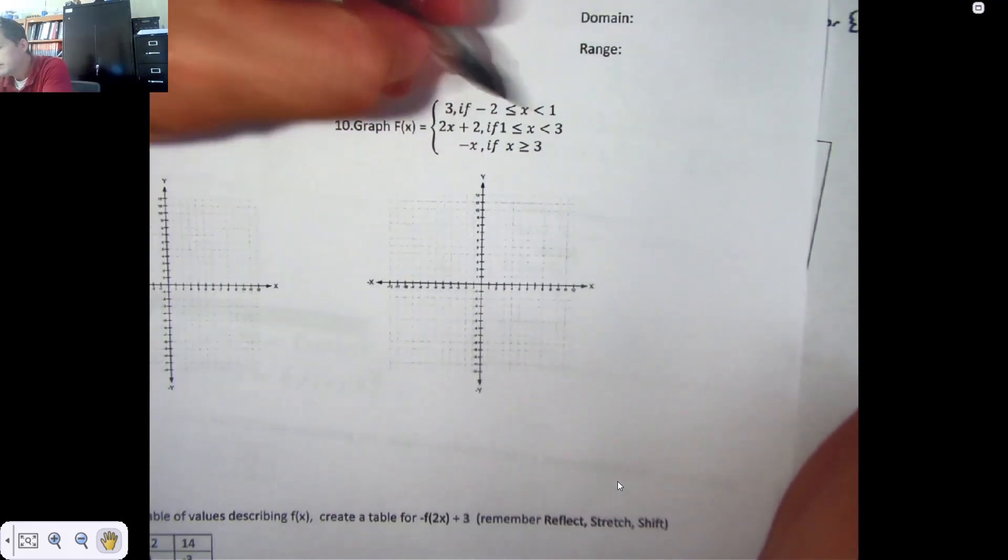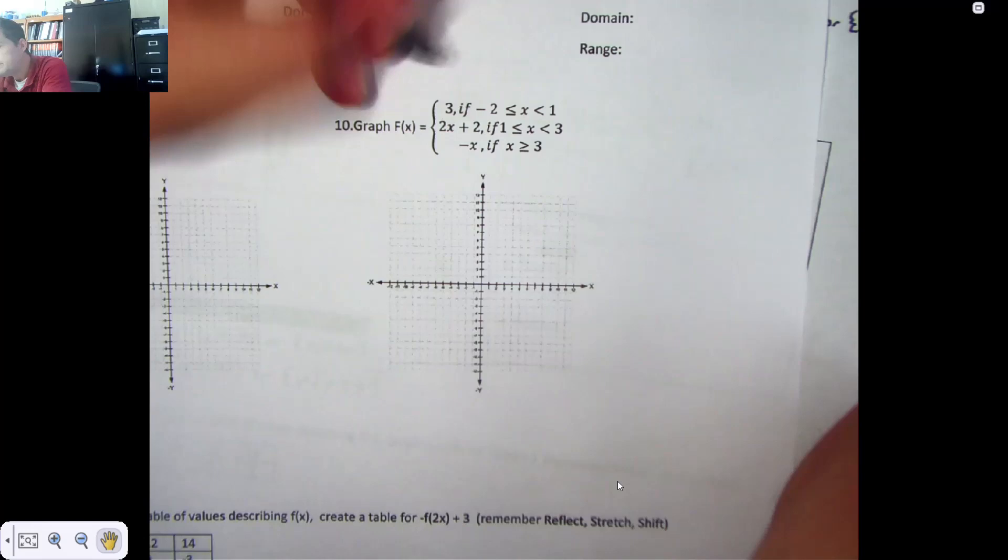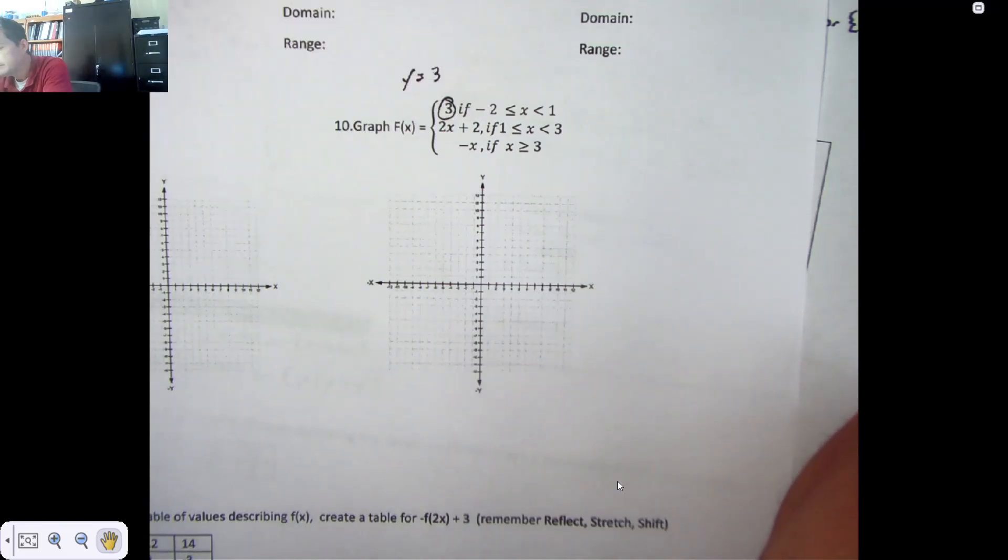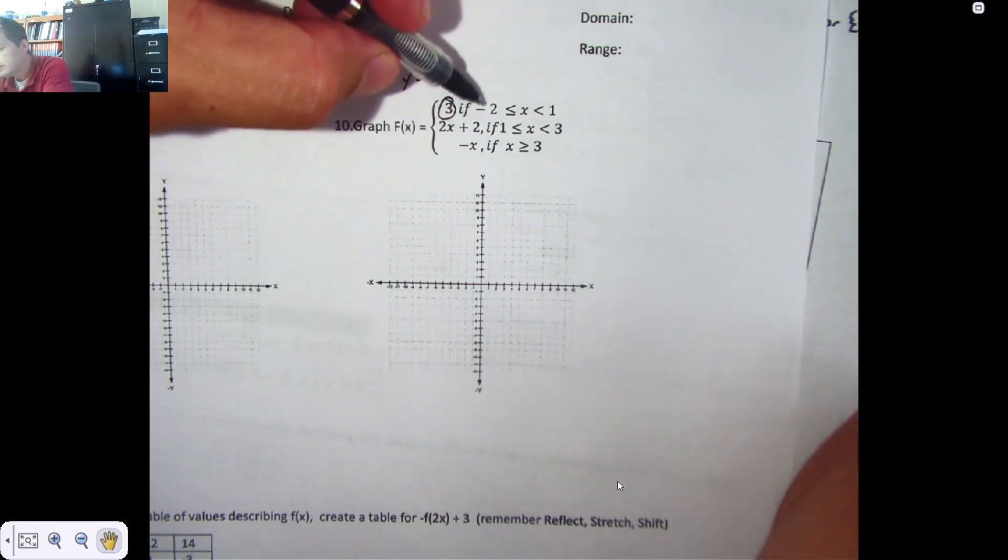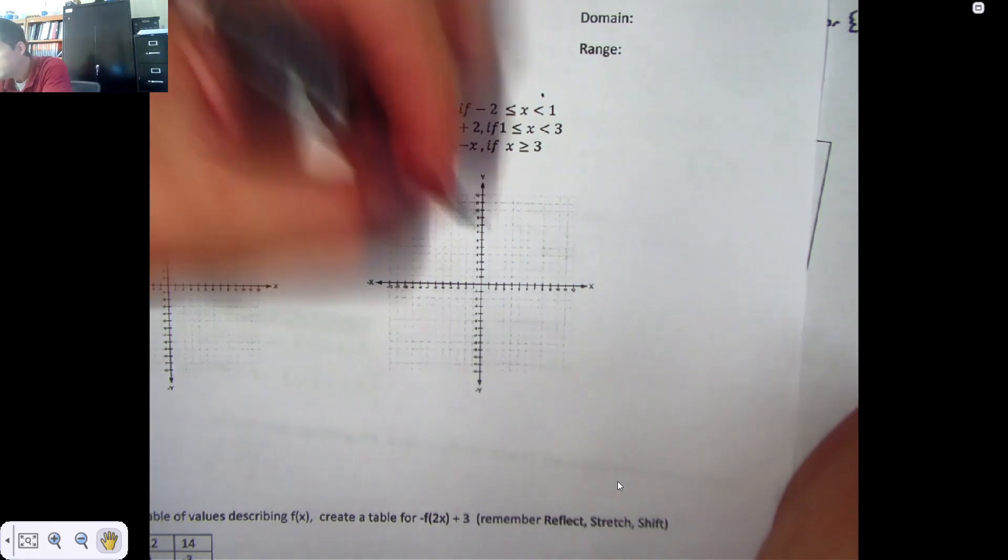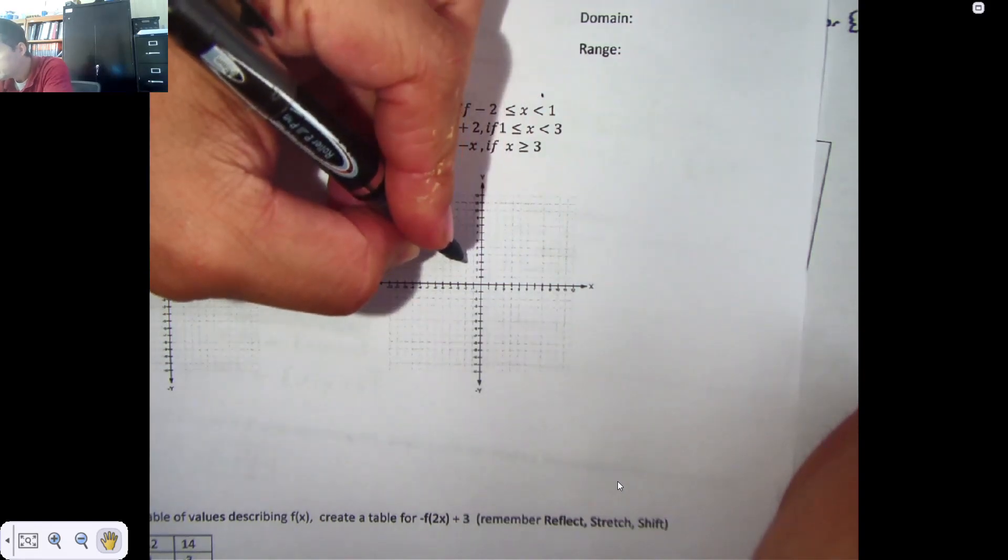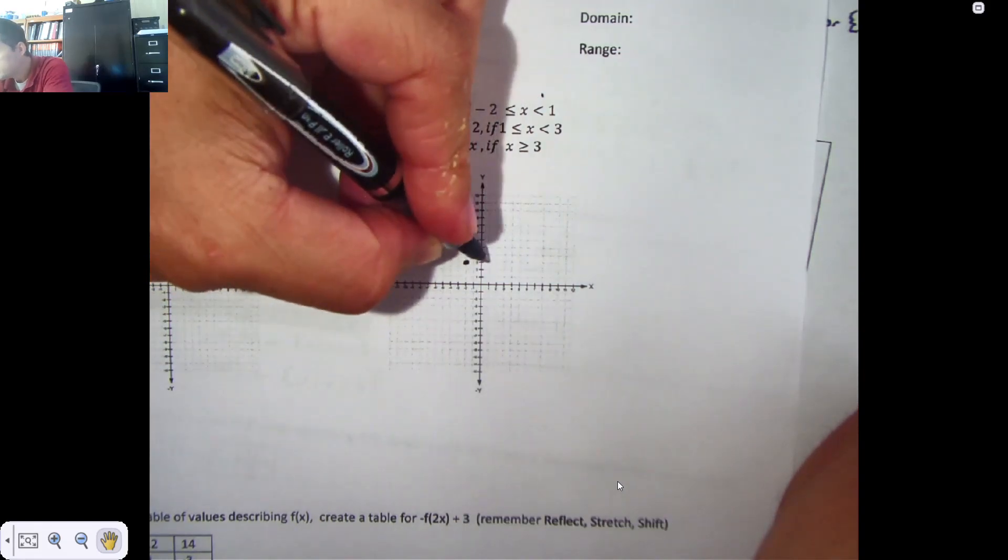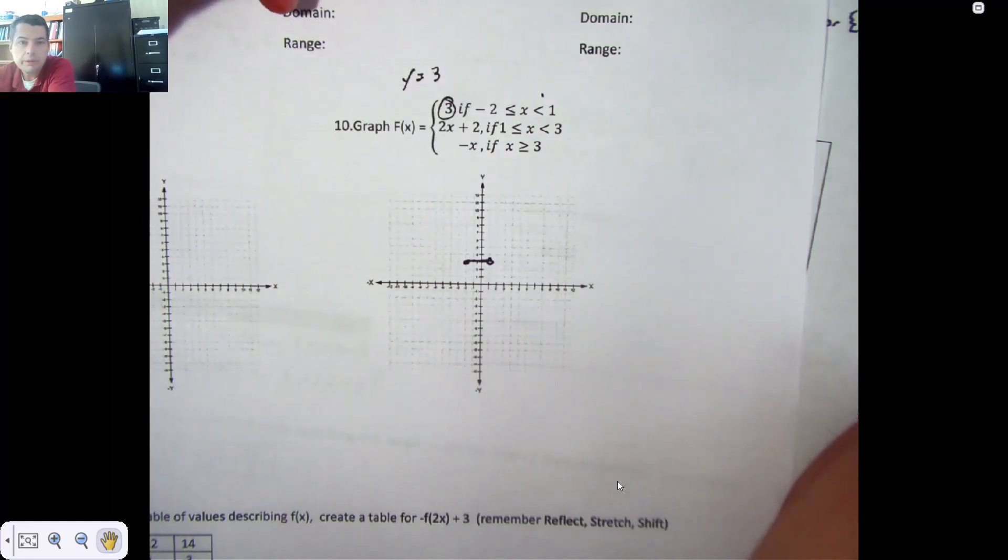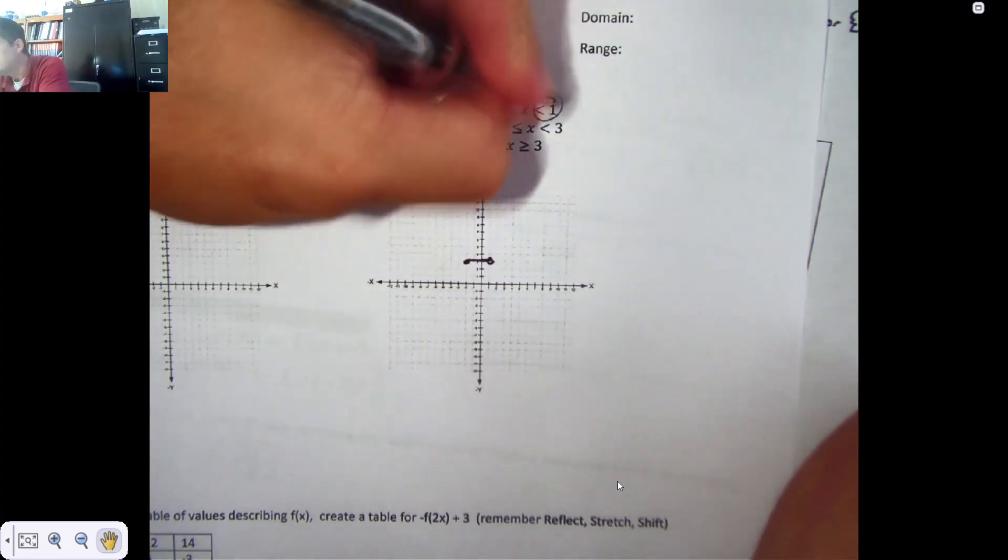So you're supposed to graph this guy between negative 2 and 1, and you need to be thinking about this as y equals 3. Now, it starts at negative 2, and it stops ridiculously close to negative 1. So it starts at negative 2, and it stops ridiculously close at 1. So I open hole to 1. Right there, open hole.